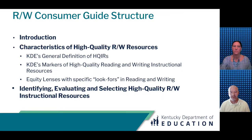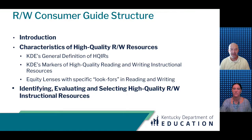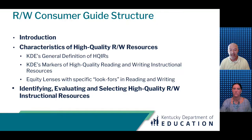The consumer guide consists of three primary parts. The introduction includes a narrative portion about the importance of HQ IRs and how the selection of resources fits within the bigger picture of the curriculum development process. The second part on characteristics of high quality reading and writing resources provides a list of those characteristics, including KDE's general definition of HQ IRs and the history of reading and writing. The third section is comprised of tools to help with identification, evaluation, and selection of high quality instructional resources for reading and writing.